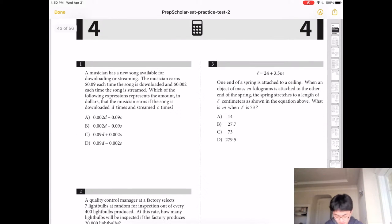A musician has a new song available for downloading or streaming. A musician earns 9 cents each time the song is downloaded, and 0.2 cents each time the song is streamed. Downloaded D times, so it's 0.09 times D, and streamed S times, so it's 0.02 times S. So the answer is C.